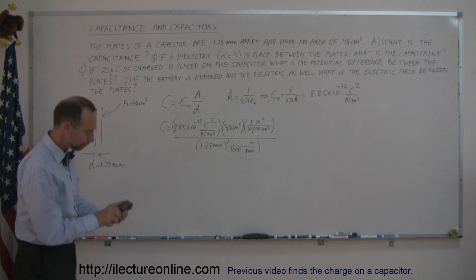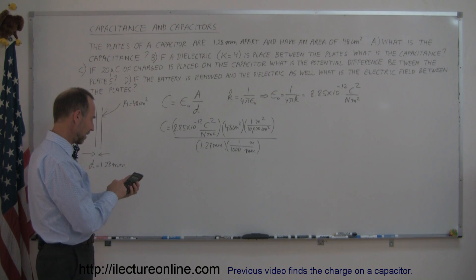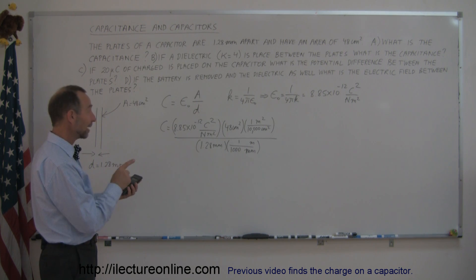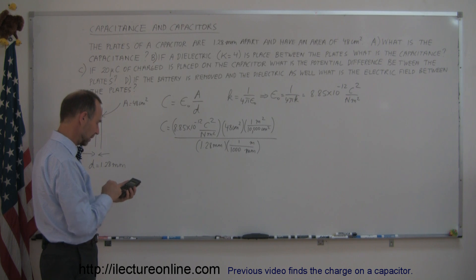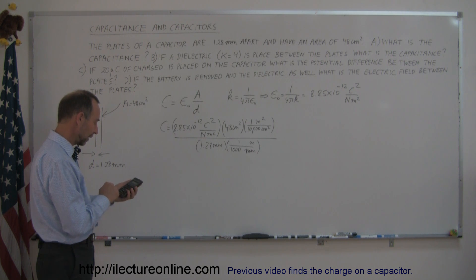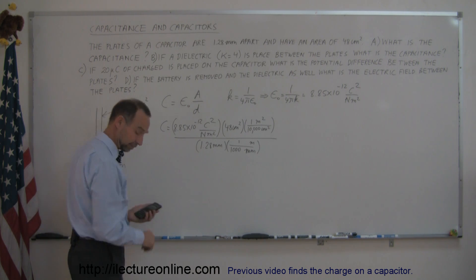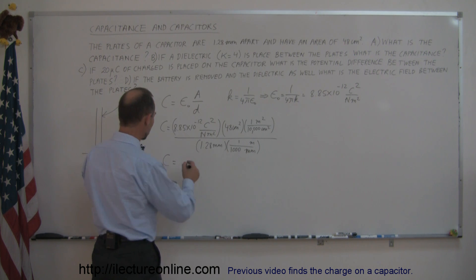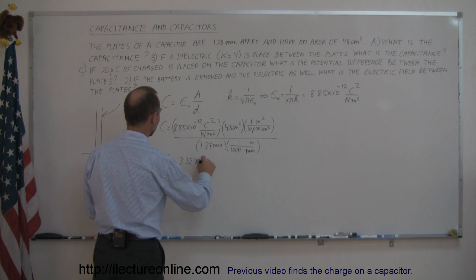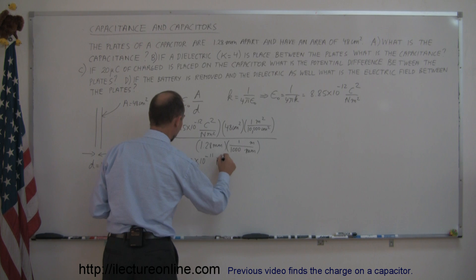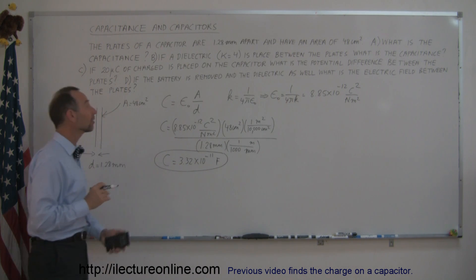Using the calculator: 8.85 times 10 to the minus 12, multiplied by 48, divided by 10,000, then divided by 1.28, and since dividing by 1 over 1,000 is the same as multiplying by 1,000, times 1,000. We get the capacitance equal to 3.32 times 10 to the minus 11 farads. That's the answer to Part A — capacitance found from physical dimensions.